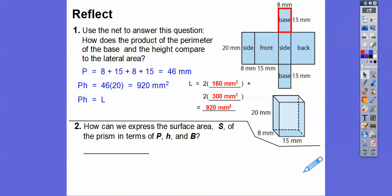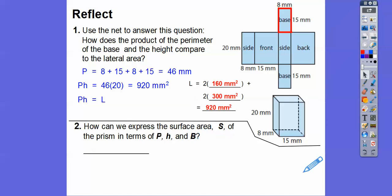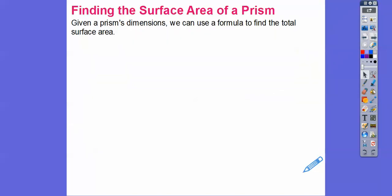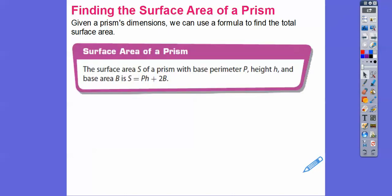So how can we represent the total surface area in terms of perimeter P? We called it S equals PH plus 2B, where P is the perimeter, H is the height, and B is the area of one of the bases. So it was 920 plus twice the base — that's a nice easy formula. Given a prism's dimensions, we can use the formula S = PH + 2B to find total surface area.